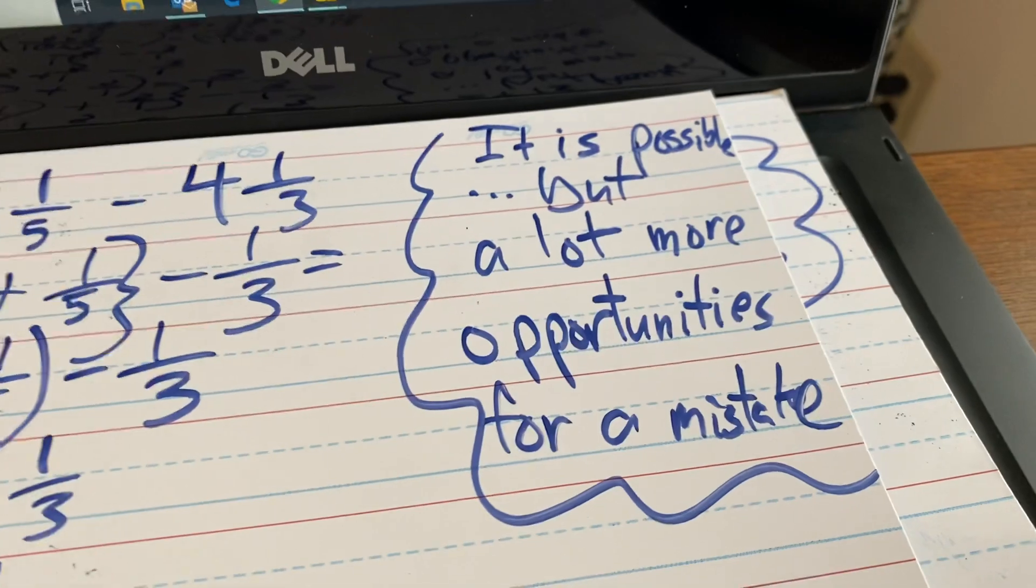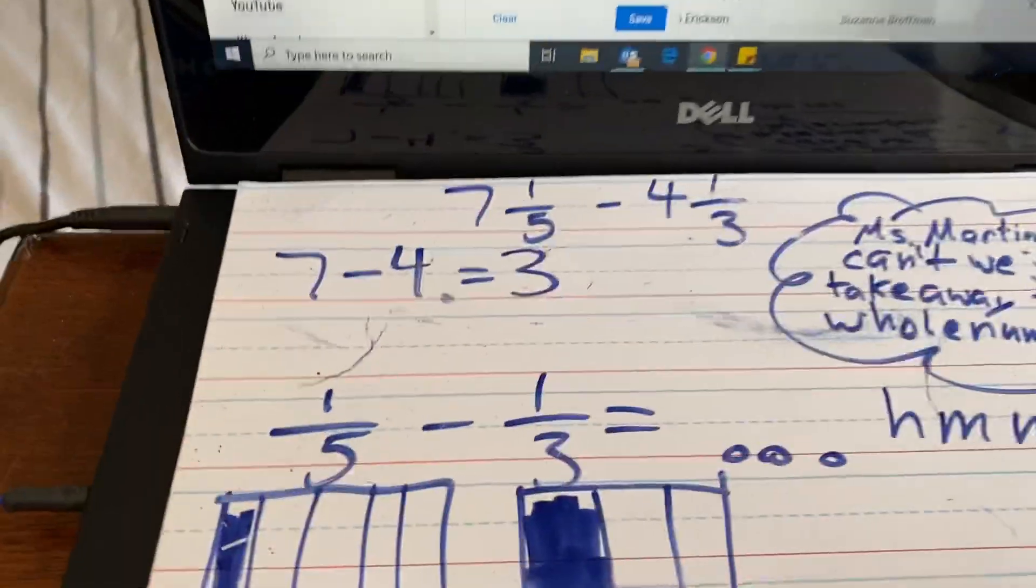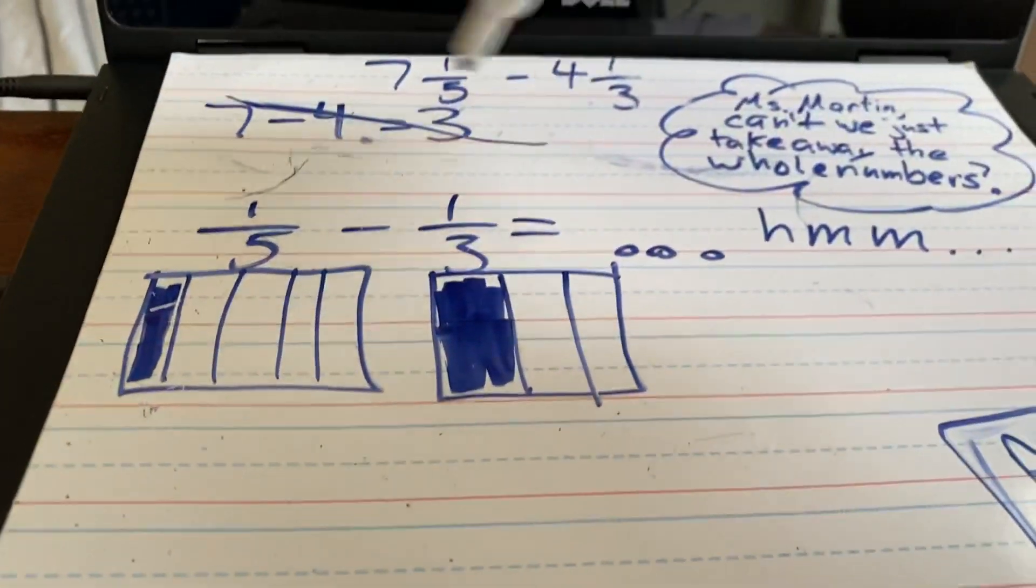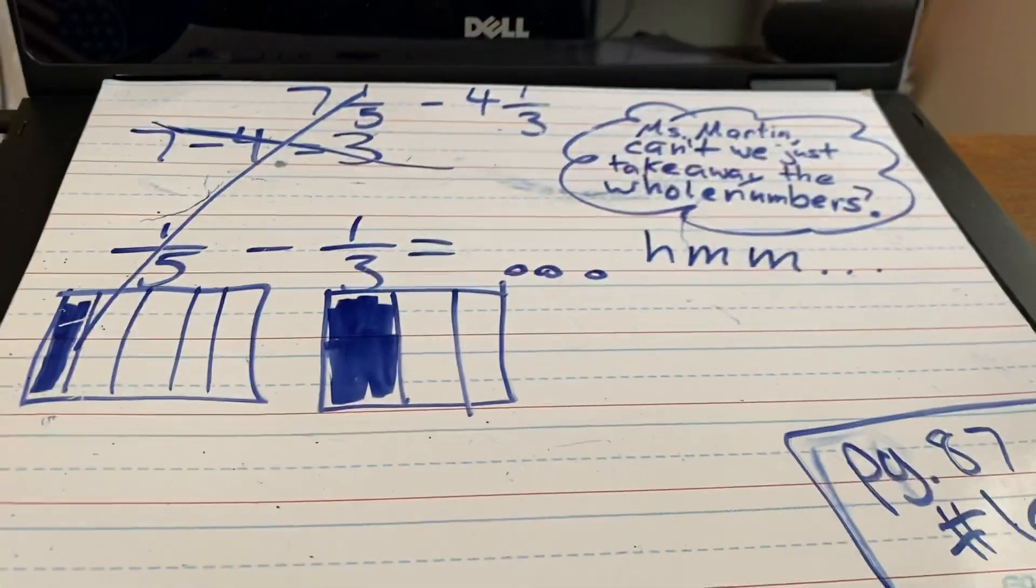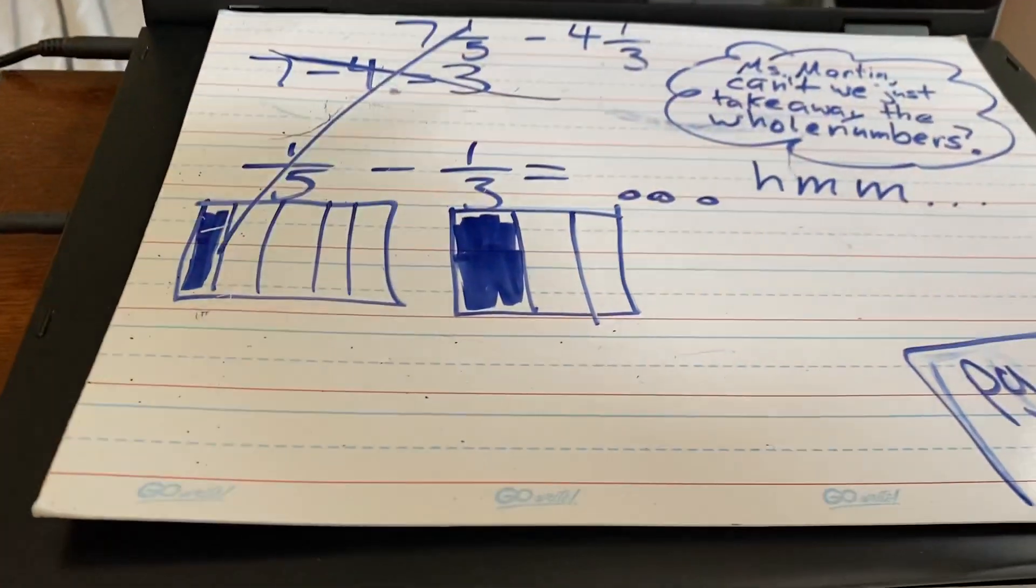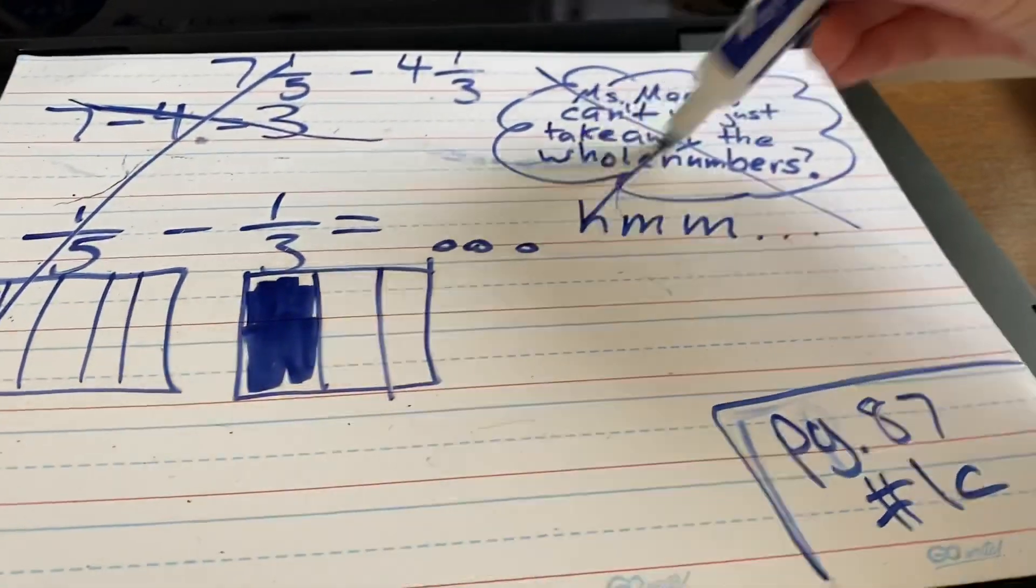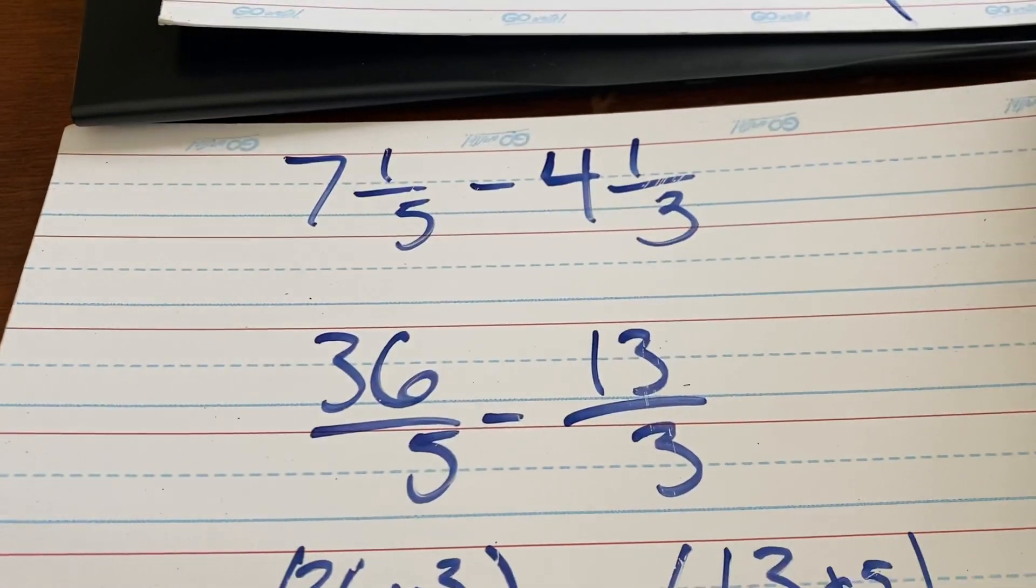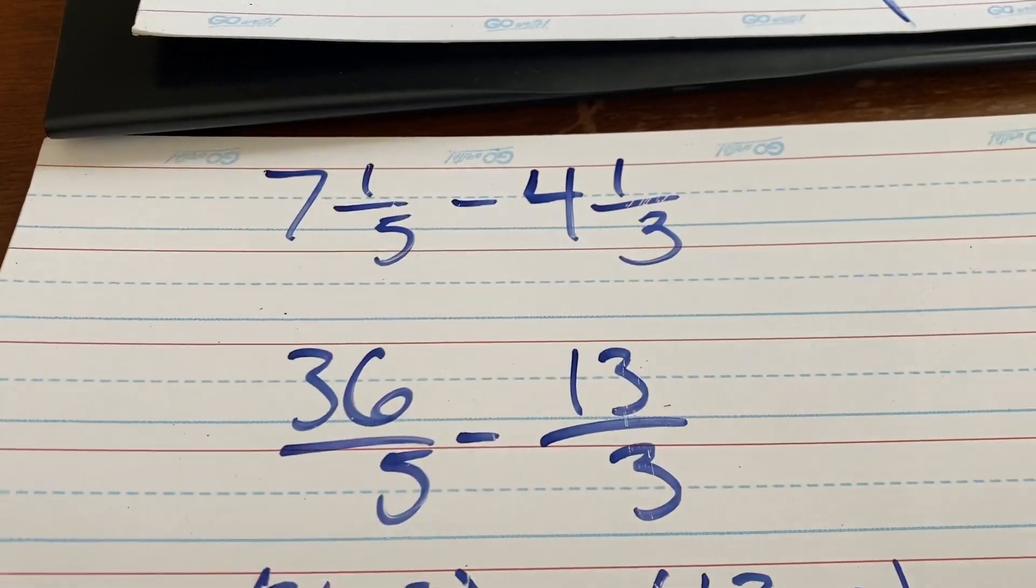So, in the grand scheme of things, do not, do not subtract the whole numbers. This is a big no-no. All right? Unless you're really confident that you can do all 6 steps of that together, don't do it. Just go ahead, rewrite them as mixed numbers, and then go from there. Thanks for joining me.